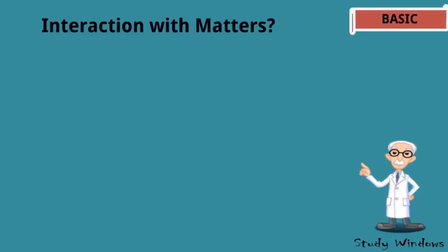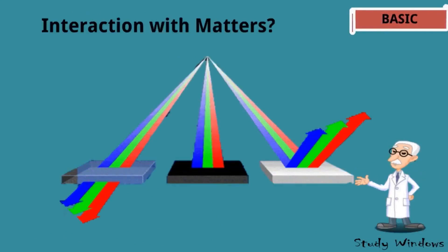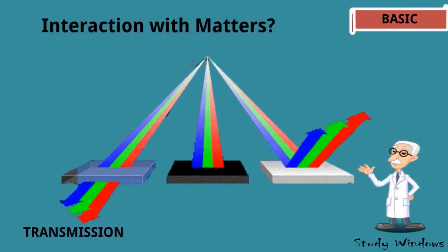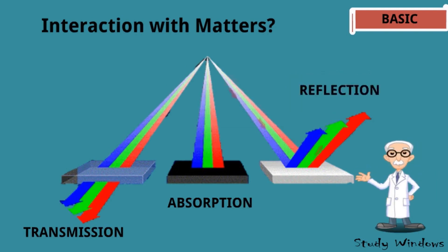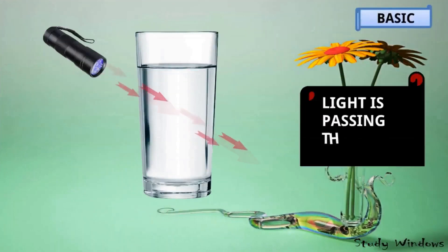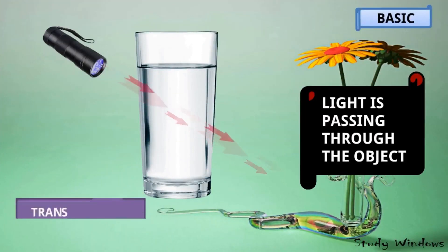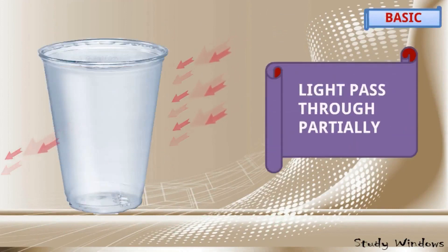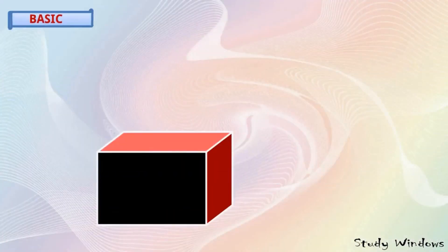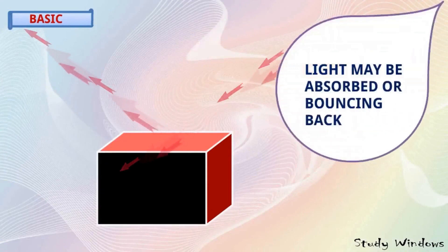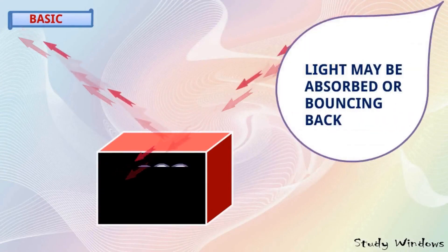Before studying, we need to know the interaction of light with matter. If light passes through the object it is called transmission. If light is absorbed it is called absorption, and if light is bouncing back it is called reflection. A glass of water lets light pass through completely, so it is a transparent object. If light passes through partially it is called a translucent object.